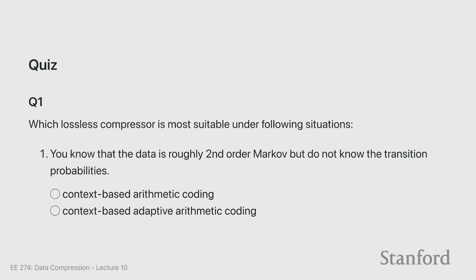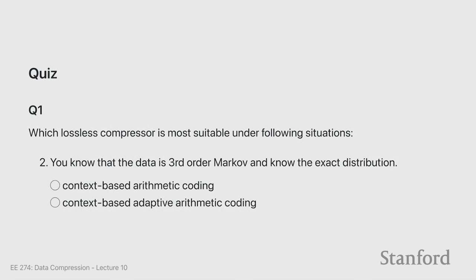The second question asked: you know your data is roughly second order Markov but do not know the actual transition probabilities — should you use context-based arithmetic coding or adaptive arithmetic coding? The correct answer is adaptive, because adaptive means you don't assume an initial model you know; you learn the model from the data, which is more appropriate when you don't know the probabilities. If you know the exact distribution, as in a third order Markov case, you just do context-based arithmetic coding since there's no point learning what you already know.